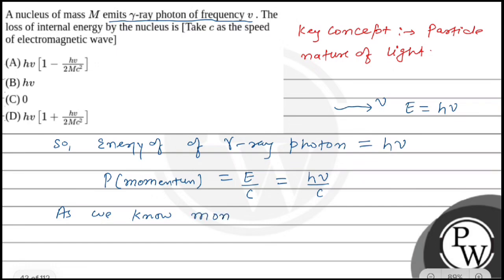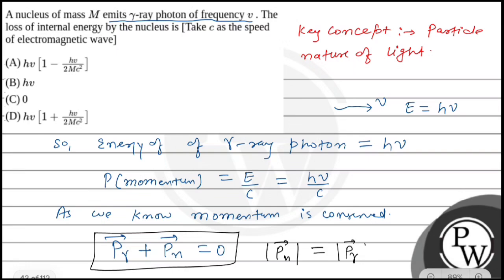So this is the momentum of gamma-ray photon. And as we know, momentum is conserved. So we can write momentum of gamma-ray photon plus momentum of nucleus equals zero. We can write this equation in vector form.